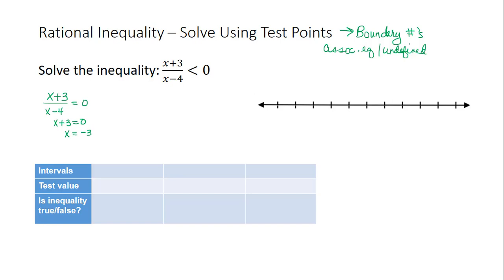We find where the function is undefined by setting where the denominator x minus 4 is equal to 0, and that gives us x is equal to 4. Keep in mind that the restriction, that is the value where the function is undefined, can never be included in the solution set.